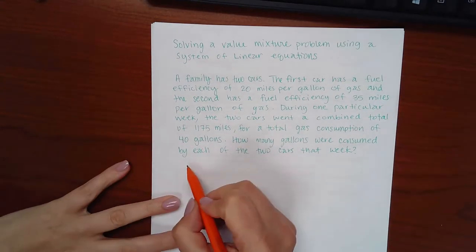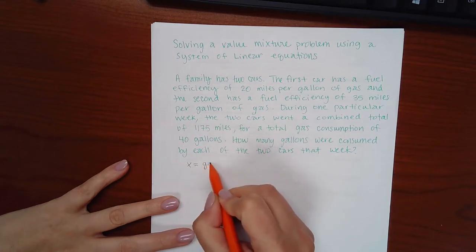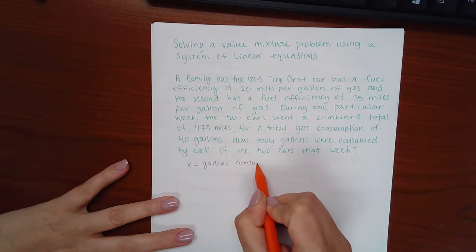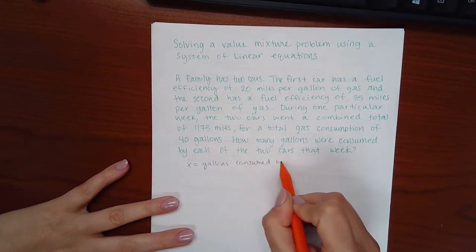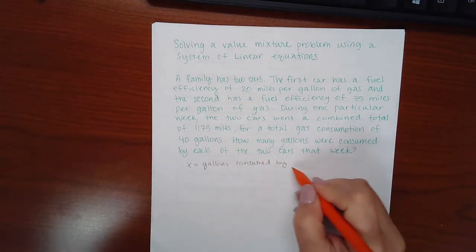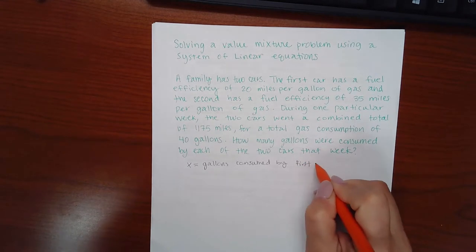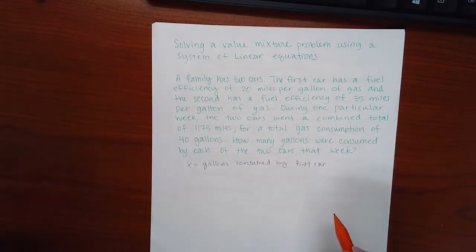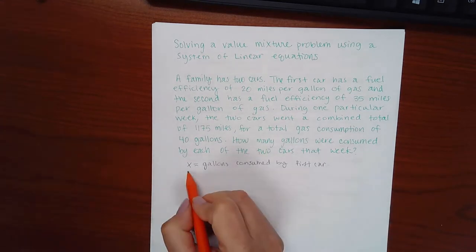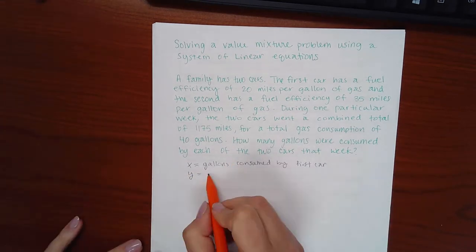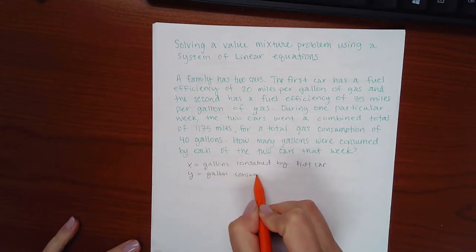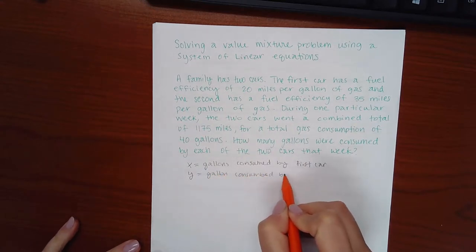So we'll say x is going to equal the gallons consumed, since this is what I'm trying to find, by the first car. They didn't tell me what kind of cars these were, they just labeled them as first car and second car. So the other variable, y, is going to be the gallons consumed by the second car.